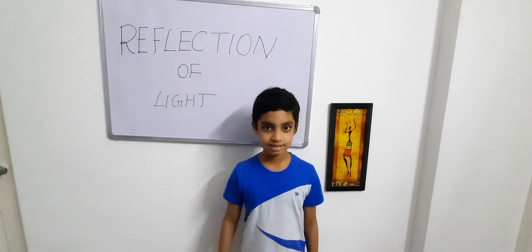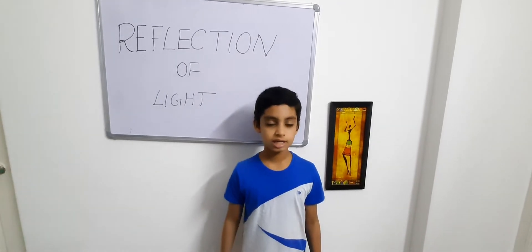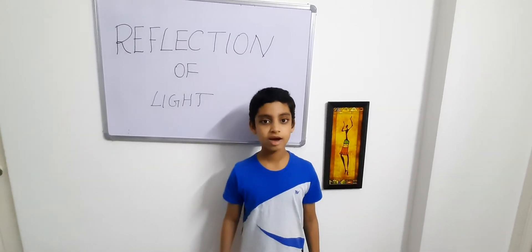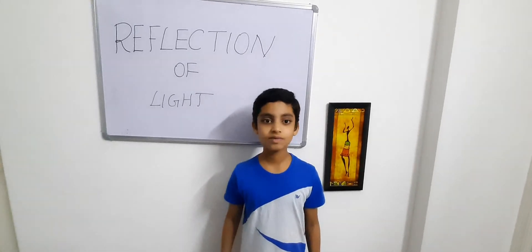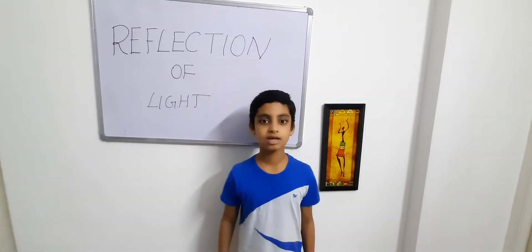The ray of light which touches an object is called incident ray. The ray of light which bounces back after touching an object is called reflected ray.